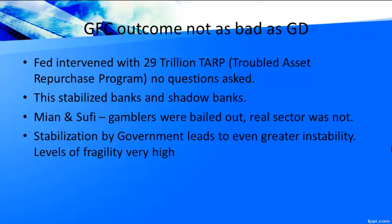Under TARP, any bank with an asset like houses booked at $1 million but worth only $200,000 on the market could sell it to the government at book value, no questions asked. Around $29 trillion were spent on this bailout. In addition, the government ran a deficit of a trillion dollars to try to prevent the recession, but that did not succeed. Basically, the banks and shadow banking sector were stabilized, but there was no relief given to the public who had suffered loss of all their savings.